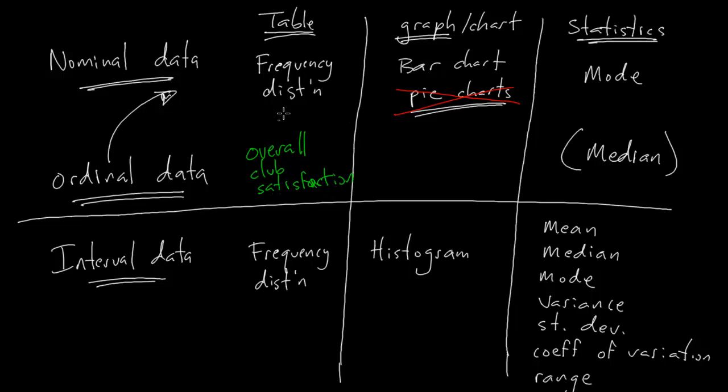We're going to do a frequency distribution. We're going to do a bar chart for overall club satisfaction, and we're going to be able to look at the mode and the median, because it is ordinal data.